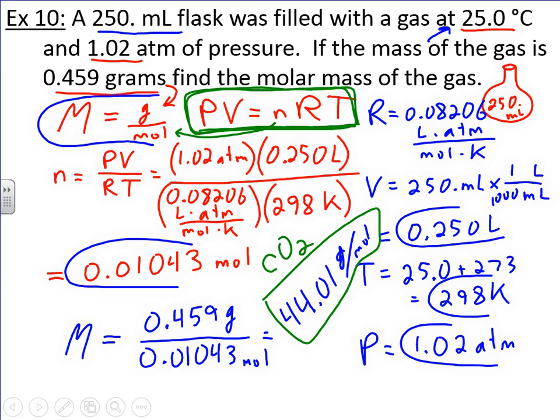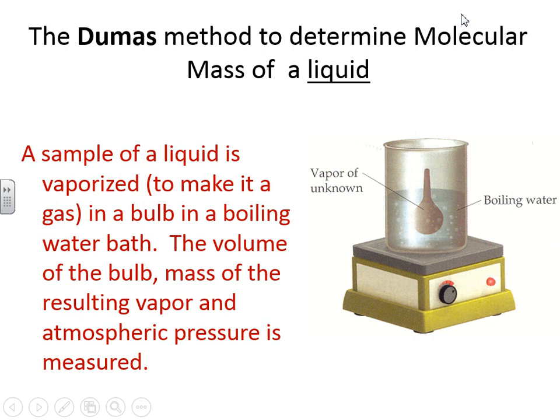We're going to wrap up with an application of this. We're actually going to do some labs involving this sort of method. Now, what you could do, there's an experiment called the Dumas method. And it's used to determine the molar mass, or the molecular mass, of liquids. Not of gases, but of liquids. And there are many, many liquids out there. And because any liquid can become a gas, we can actually apply PV = nRT now to liquids, which is pretty fascinating.